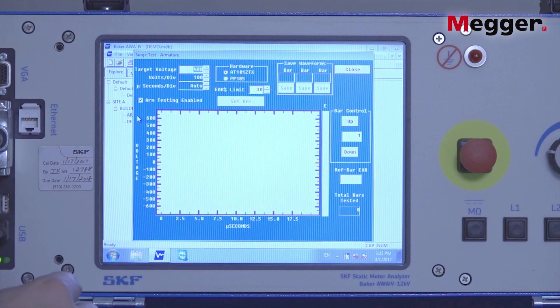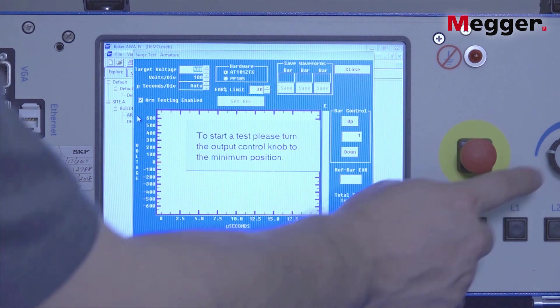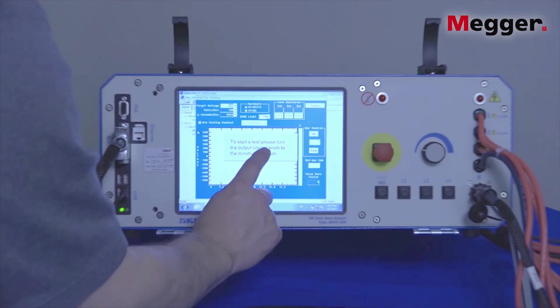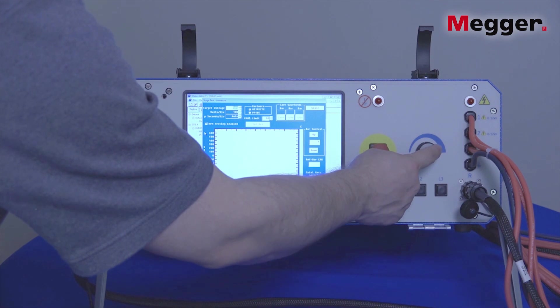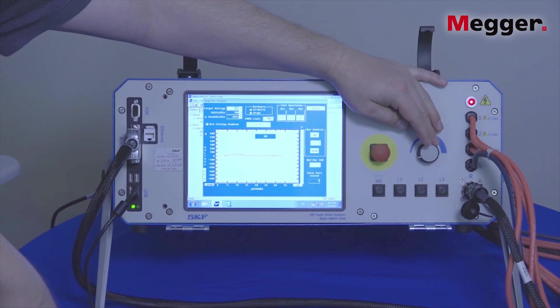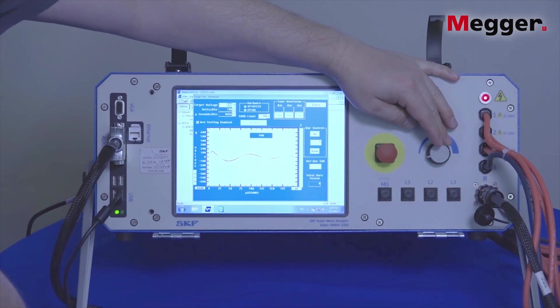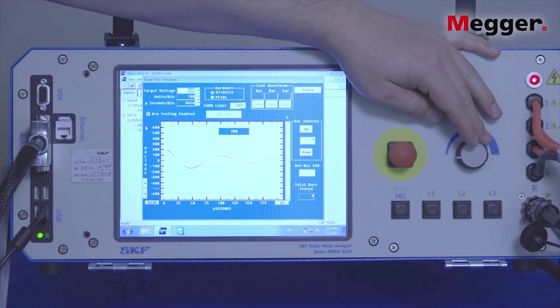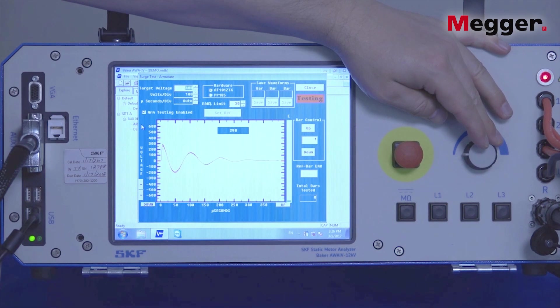To initiate the test, push the test button. Make sure the knob is at the minimum position to start the test, then increase the voltage manually until we achieve the desired test voltage, in this case 400 volts.